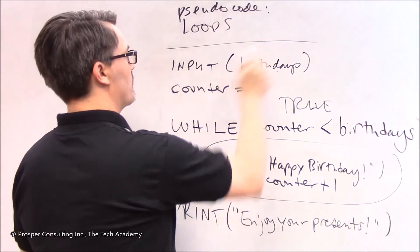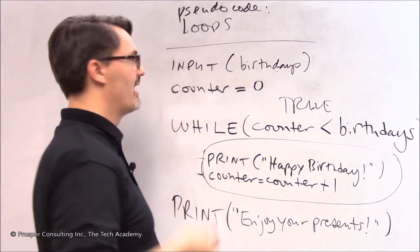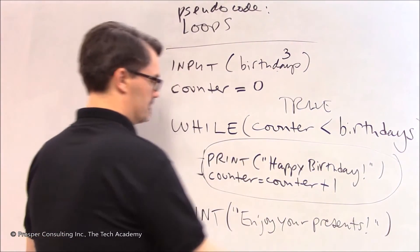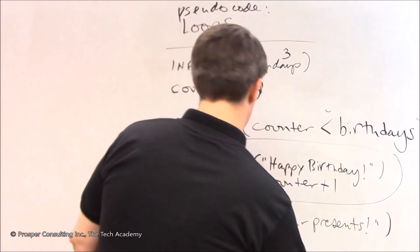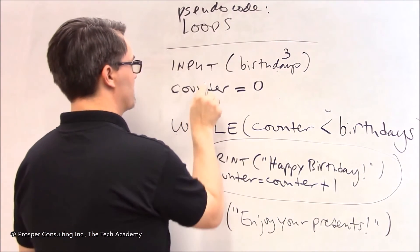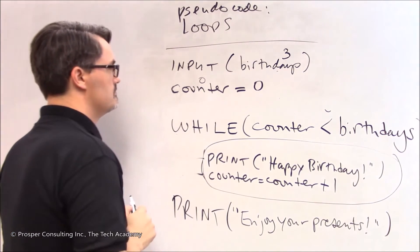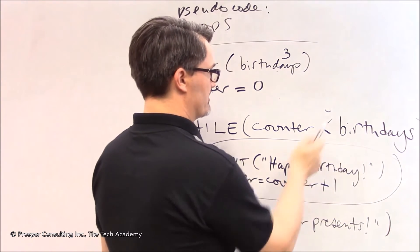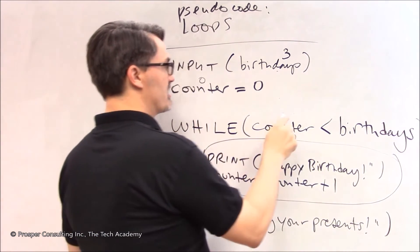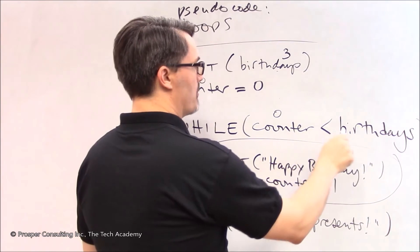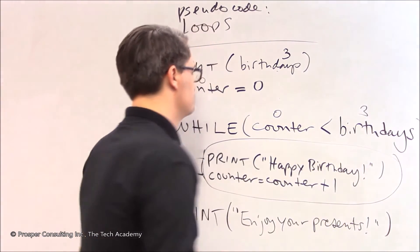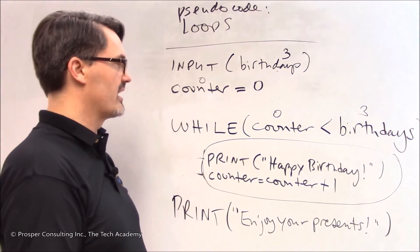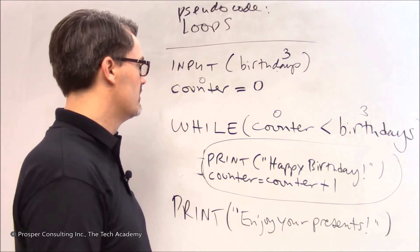Let's look at how this works. Your niece puts in three. It's her third birthday. I'm three. The computer now has birthdays equal to three. Now the computer says okay good, I'm going to set counter to zero. It has counter equal to zero. And it gets to this statement while counter less than birthdays. It says well right now counter is equal to zero and birthdays is equal to three. Counter is in fact less than birthdays because zero is less than three. So this is true.